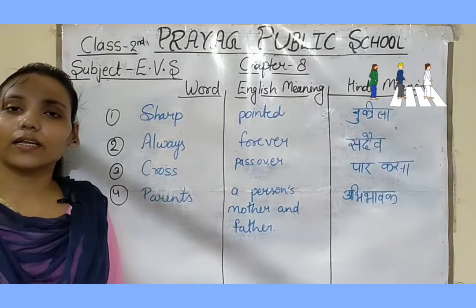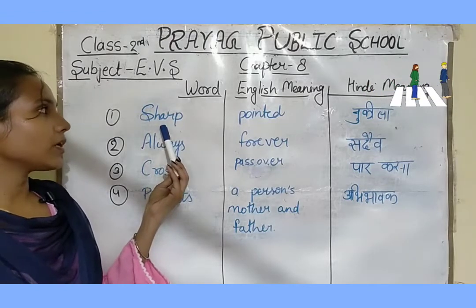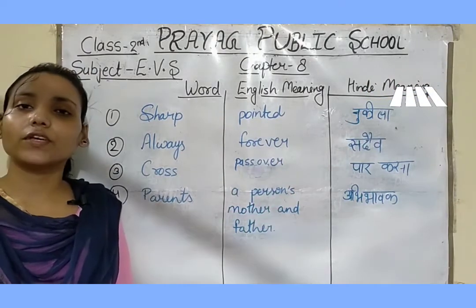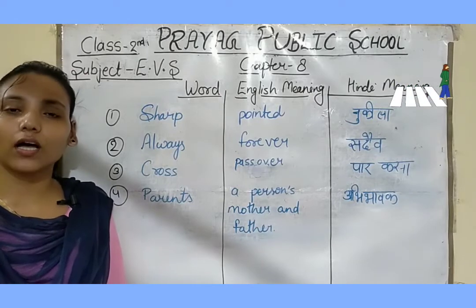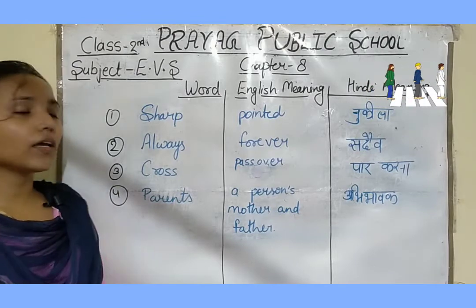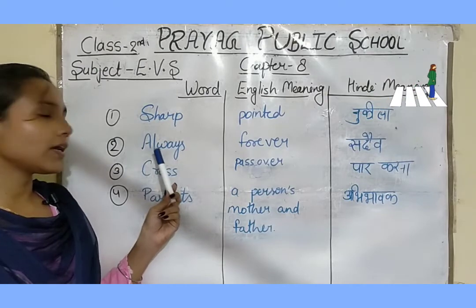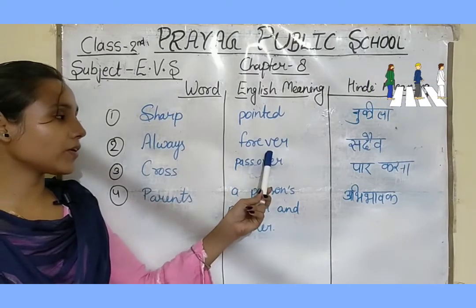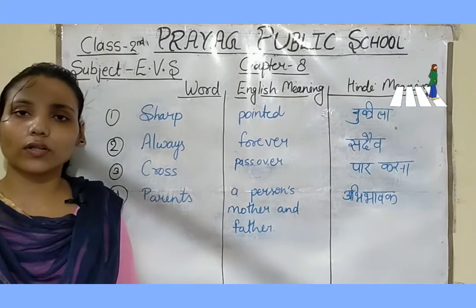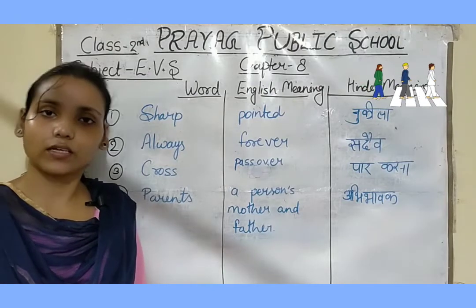Students, our next exercise is word meanings. Our first word is sharp — its English meaning is pointed and Hindi meaning is nukila. We should not play with sharp objects as they can hurt us. Next word is always — its English meaning is forever and Hindi meaning is sadaa. We should always walk on the footpath.